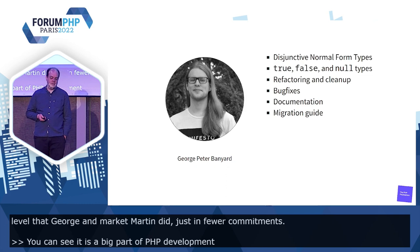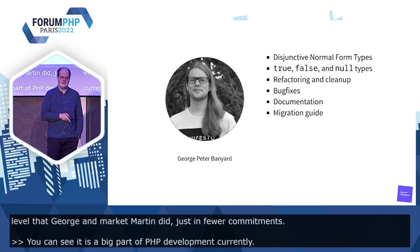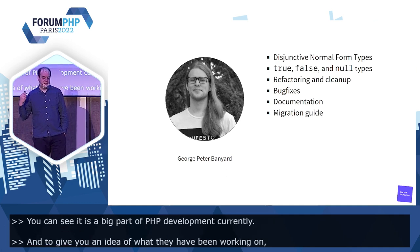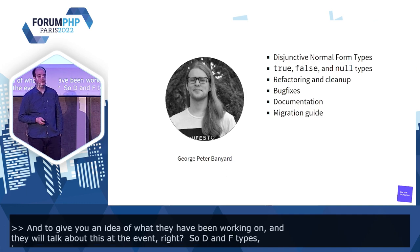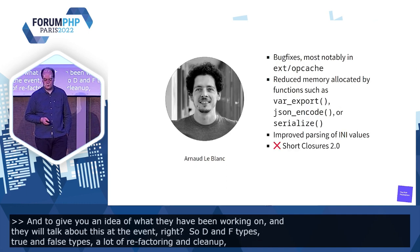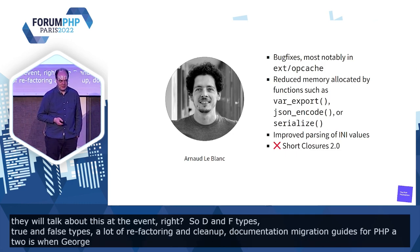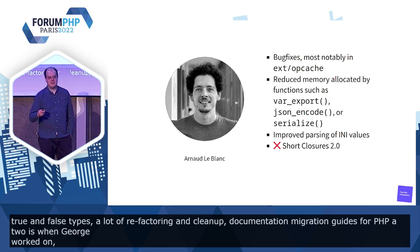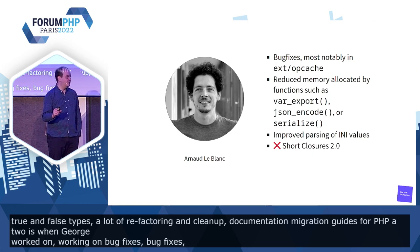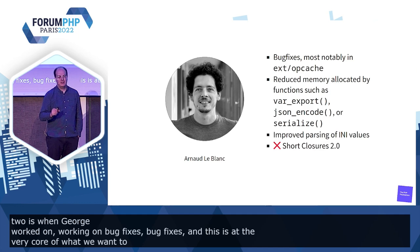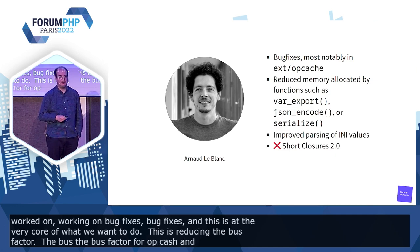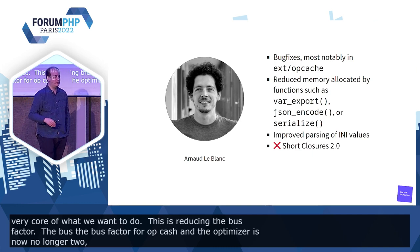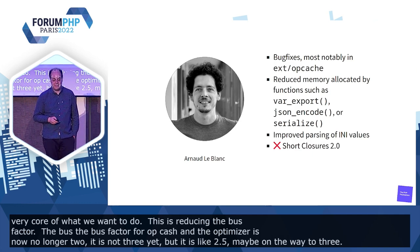To give you an idea of what they've been working on: DNF types, true, false, and null types, a lot of refactoring and cleanup, bug fixes, documentation, migration guides for PHP 8.2 — that's what George worked on. Arnaud worked on bug fixes in opcache. And this is at the very core of what we want to do — this is reducing the bus factor. The bus factor for opcache — bytecode cache and the optimizer — is now no longer 2. It's probably not 3 yet, but it's like 2.5, on the way to 3. That makes me very happy and feel safe.